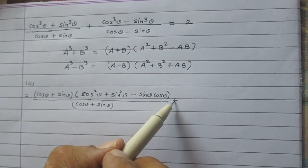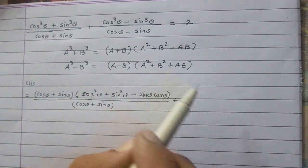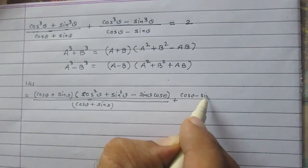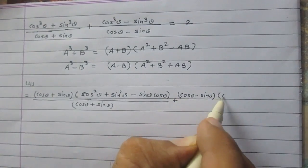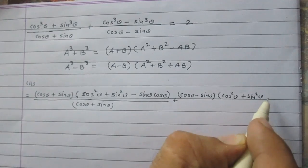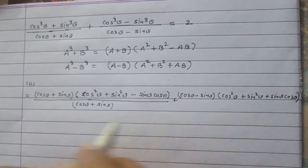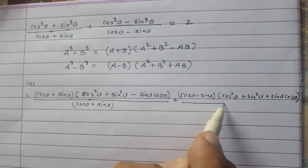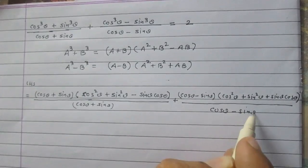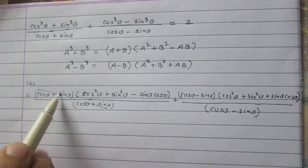Plus the second part: cos cubed theta minus sine cubed theta. According to the second identity, cos cubed theta minus sine cubed theta can be expressed as cos theta minus sine theta, then cos squared theta plus sine squared theta, then plus sine theta cos theta, whole divided by cos theta minus sine theta.